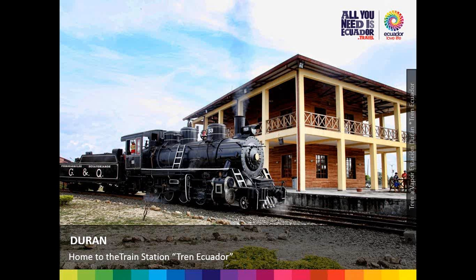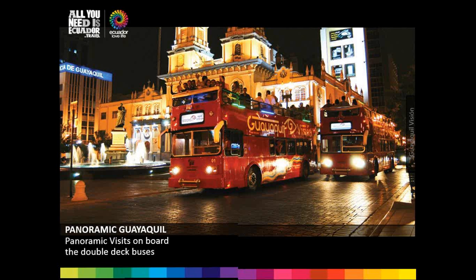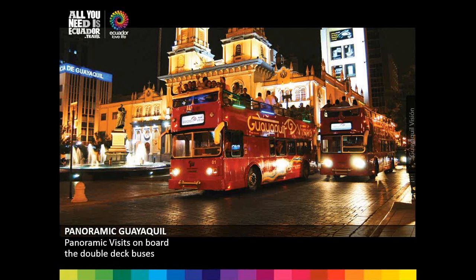The Durán station is the very end of the Tren Crucero railway as it comes down from the highlands to the coast — trains stop here and leave visitors before crossing over. Santai Island, seen in a satellite image, contrasts the developed area of homes and streets to the left with the lush greenery of the island — fantastic for exploring the natural components of the area. A quick river trip or bridge crossing gets you there; plan about two to three hours of walking to experience the original tropical habitat.